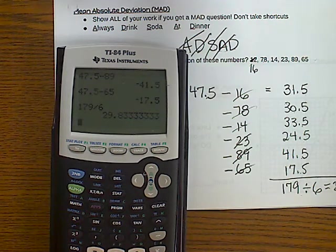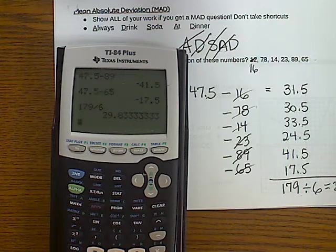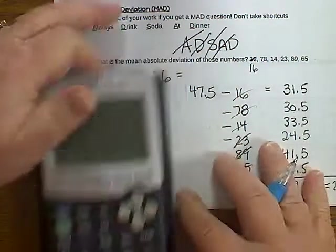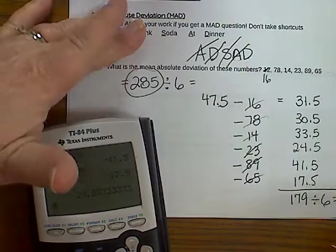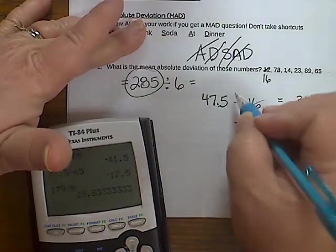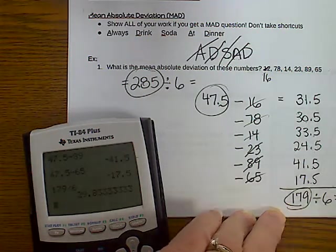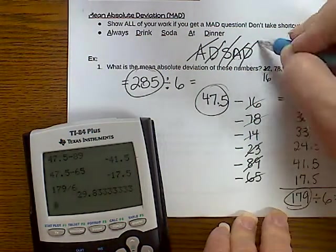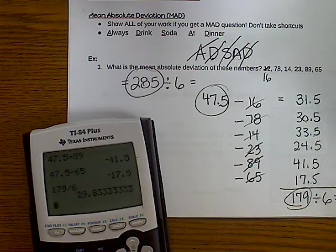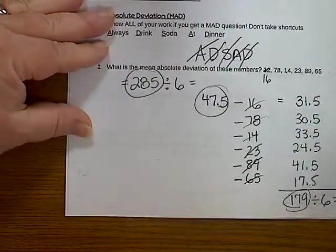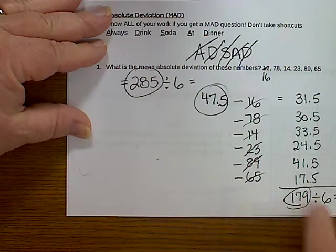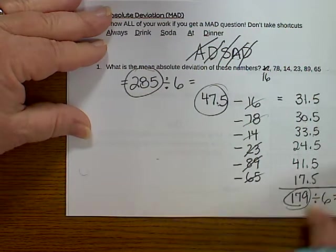And that is all there is to mean absolute deviation. People, this answer will be as an answer choice. Lots of times, this answer is an answer choice. Lots of times, this answer is an answer choice. And that's why if you write down the steps and cross them off as you do them, you will get the correct answer because they're trying to fool you and get you to stop too soon. Let's flip the page.